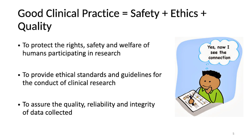There are three critical principles that are universally recognized when we think about good clinical practices, and that is safety, ethics, and quality. Safety is to protect the rights, safety, and welfare of human subjects participating in research. Ethics provides ethical standards and guidelines for the conduct of research. And quality refers to the quality of data being collected, which also helps in promoting reproducibility of trial data.